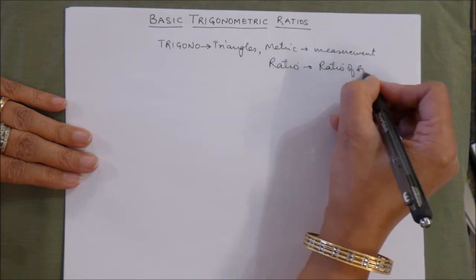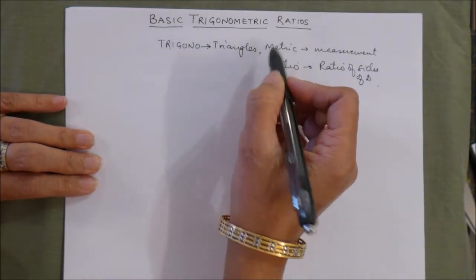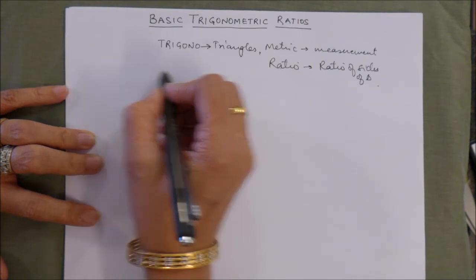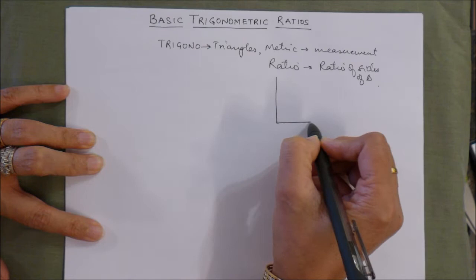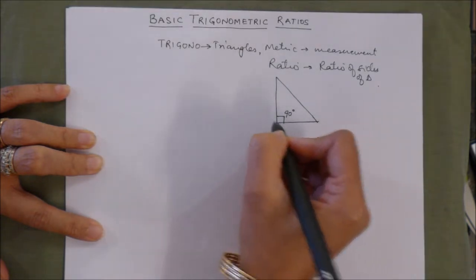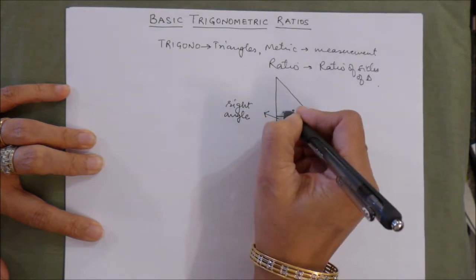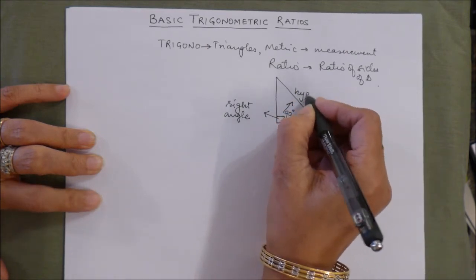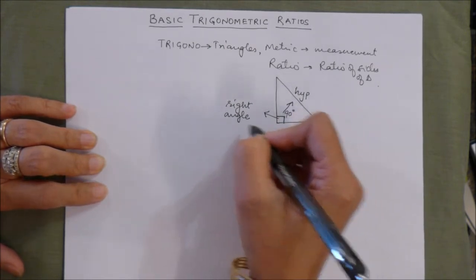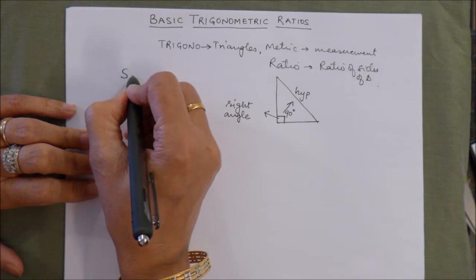Trigonometric ratios are applicable only for right triangles. When we say right triangle, that means one angle has to be 90 degrees. This angle is 90 degrees, which we call the right angle, and the side opposite to it is always the hypotenuse.